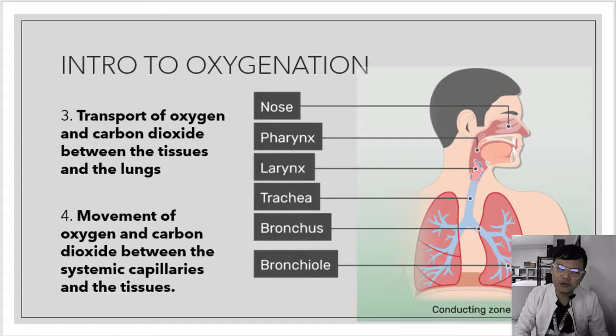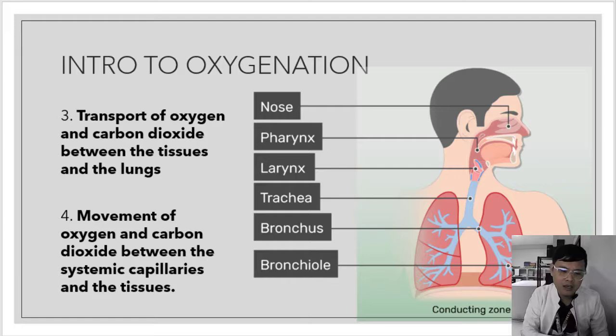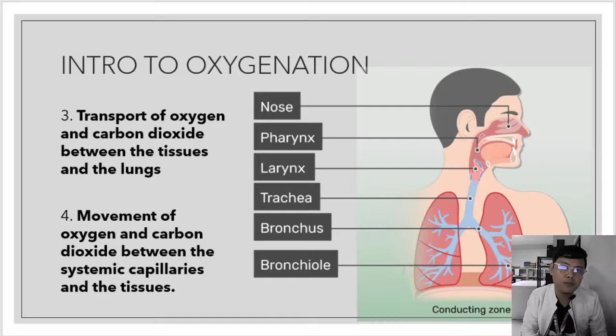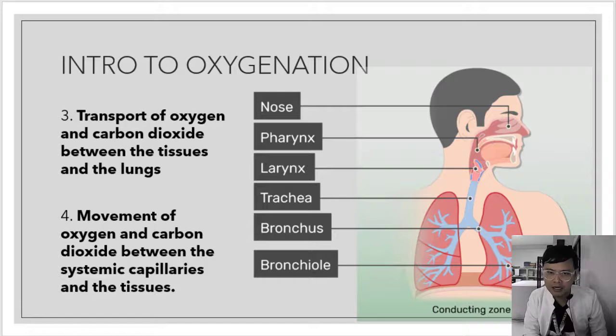In the transport of oxygen and carbon dioxide between the tissues and the lungs, there are several factors that affect the rate of oxygen transport. These include: cardiac output — the blood pumped by the heart; the number of erythrocytes and blood hematocrit, because more RBCs means more carriers of oxygen; hemoglobin within the RBC which carries oxygenated blood; and exercise — the more you exercise, the more oxygen enters and the alveoli are also exercised.